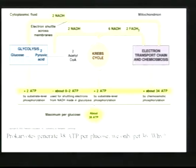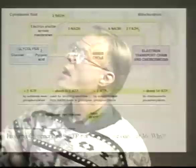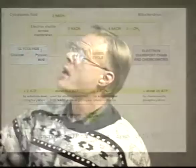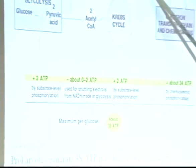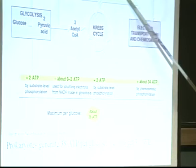Here's our summary of everything we've talked about. Glycolysis: glucose to two pyruvic acids, two NADHs produced, and two ATPs. Two ATPs are used for shuttling electrons made in glycolysis across the membrane. We get into the mitochondrial matrix with acetyl-CoAs, they go into the Krebs cycle, we pop off a bunch of CO2s, get two ATPs, and a bunch of NADH and FADH2s. All of these NADHs and FADH2s go into electron transport and chemiosmosis — that's where the big payoff is, generating about 34 ATPs.